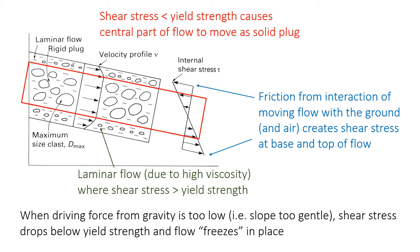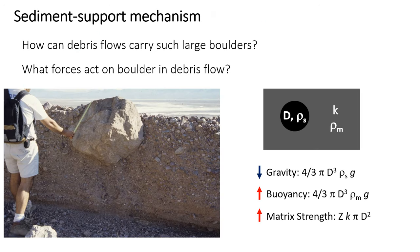As the slope becomes gentler, the driving force of gravity decreases and the flow slows down. At some critical slope, the shear stress will drop below the yield strength and the flow will abruptly stop and freeze in place. Because it freezes abruptly, the sediment grains carried within the flow will not be able to settle to the bottom — they can't sort or orient themselves. This explains how larger boulders can be trapped within the middle or even the top of the flow.